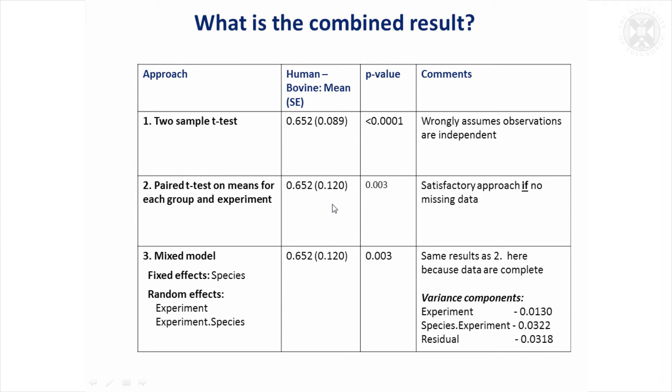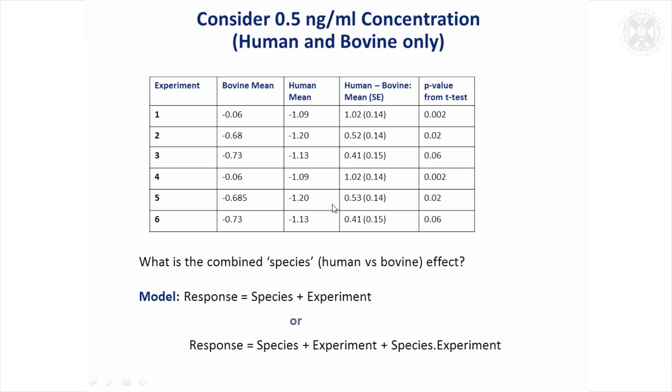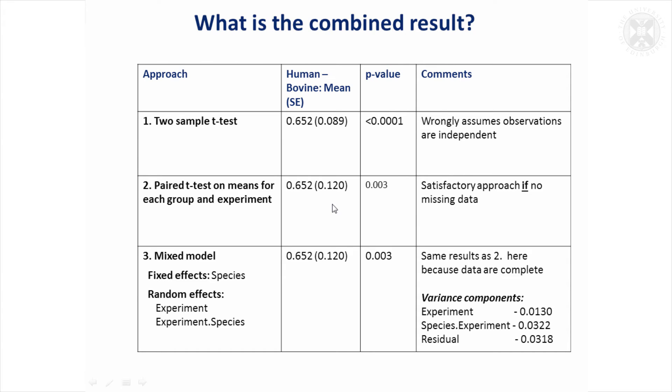A very naive approach would be simply to take all these—there's 18 values altogether here and 18 there—and just do a t-test based on them to see if they were different. But that's completely ignoring the fact they've come from different experiments. If that's done, comparing two groups of 18 with a two-sample t-test, you get highly significant results. You might think, yes, I've proved beyond doubt that there's a difference between the human and bovine samples. But really you do need to take into account the fact the data are from different experiments.